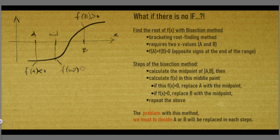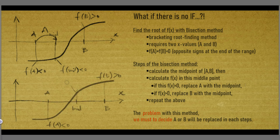If f at the midpoint is negative, replace a with the midpoint. If positive, replace b with the midpoint. Then repeat the method until the range a to b becomes small enough.